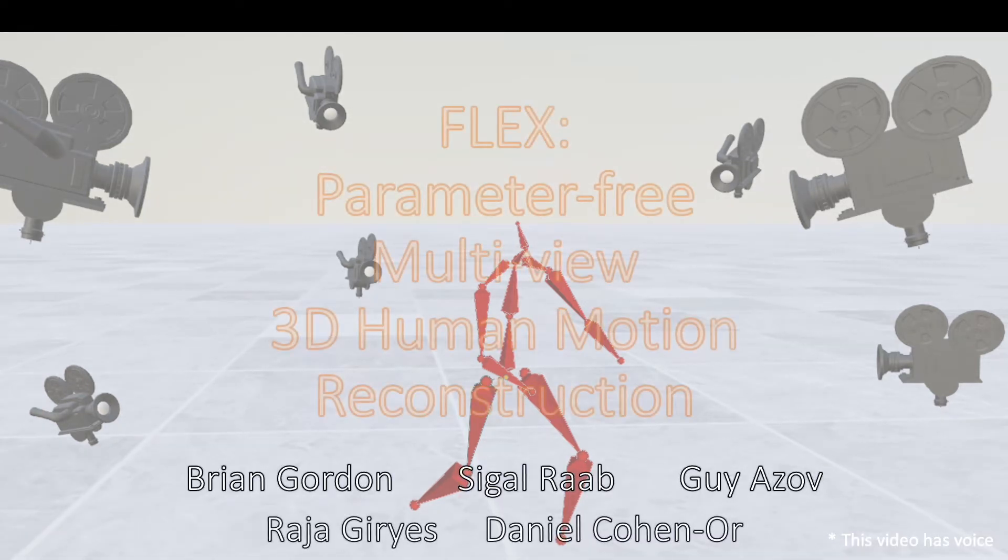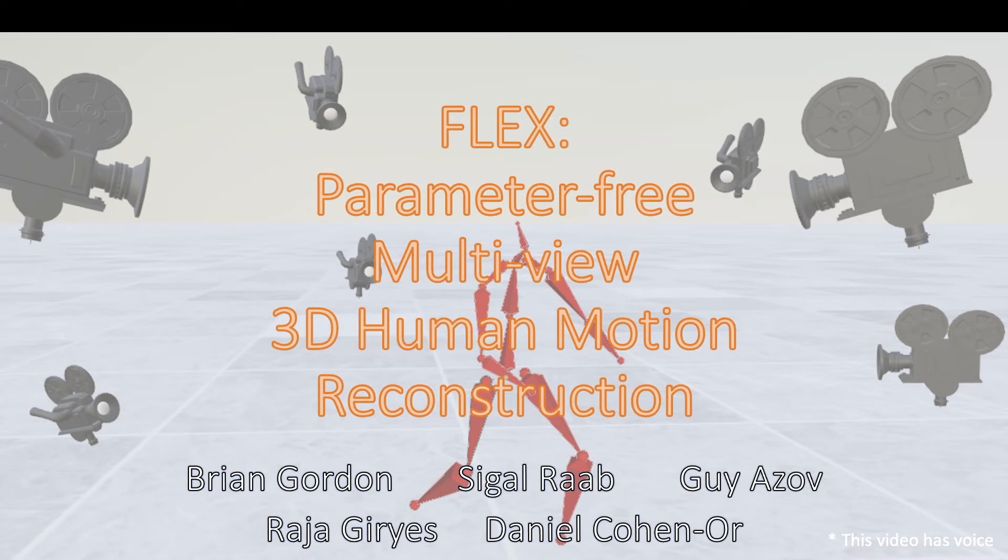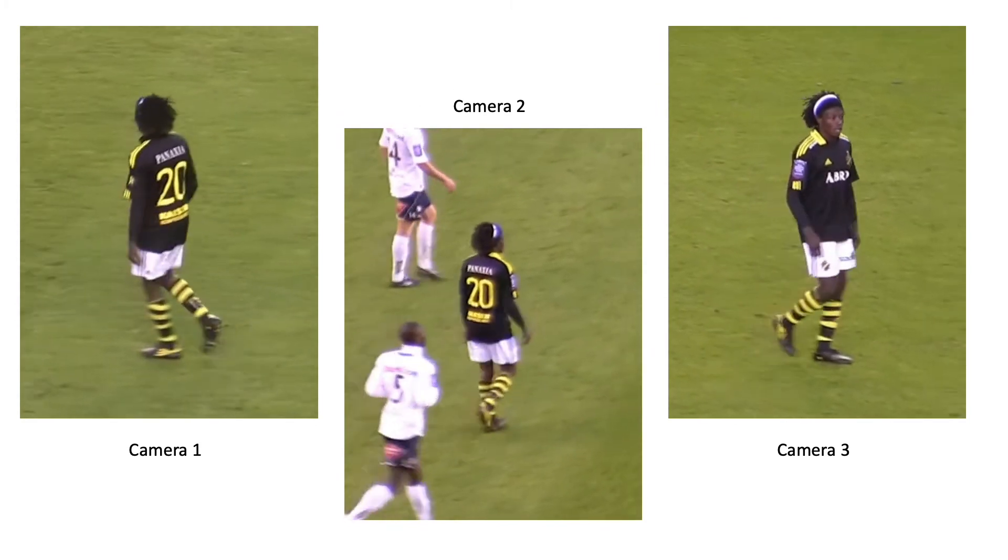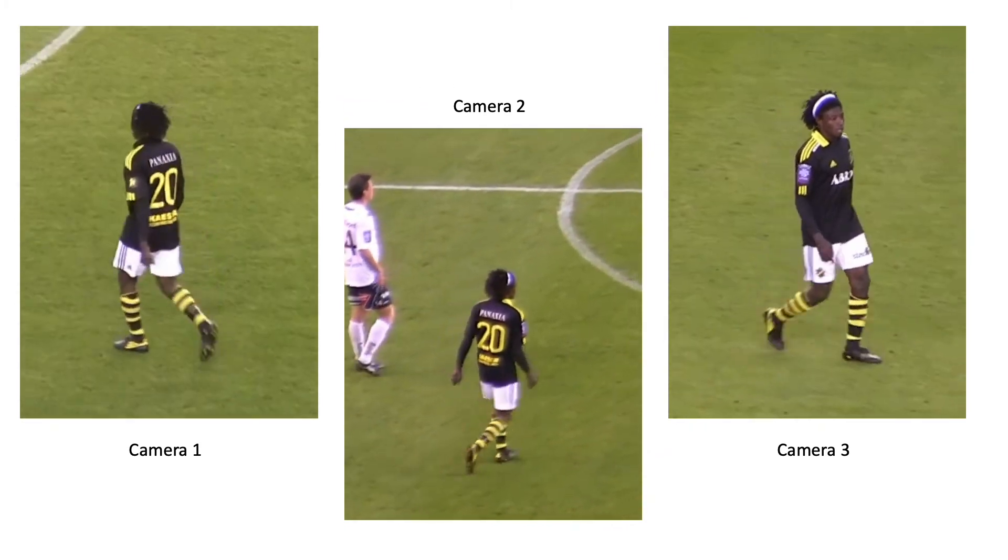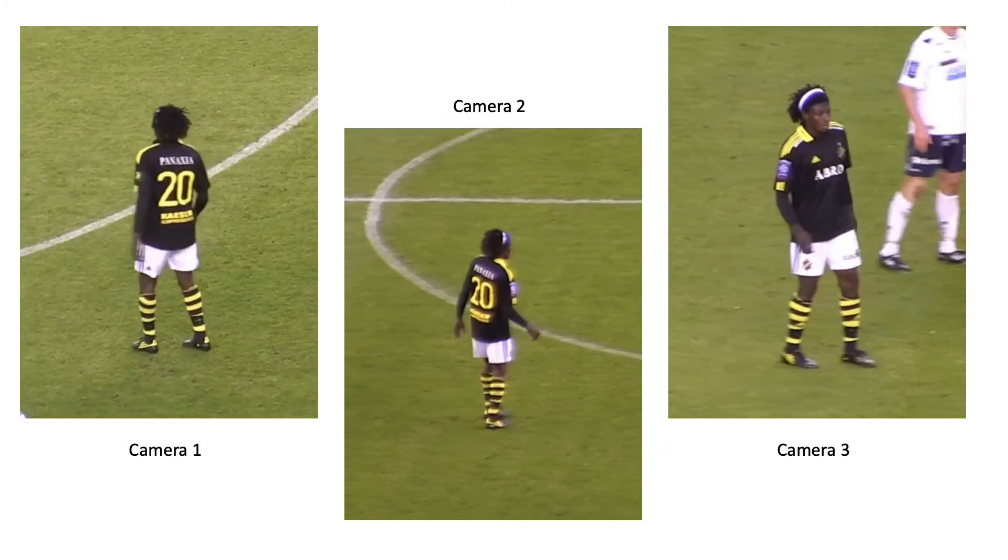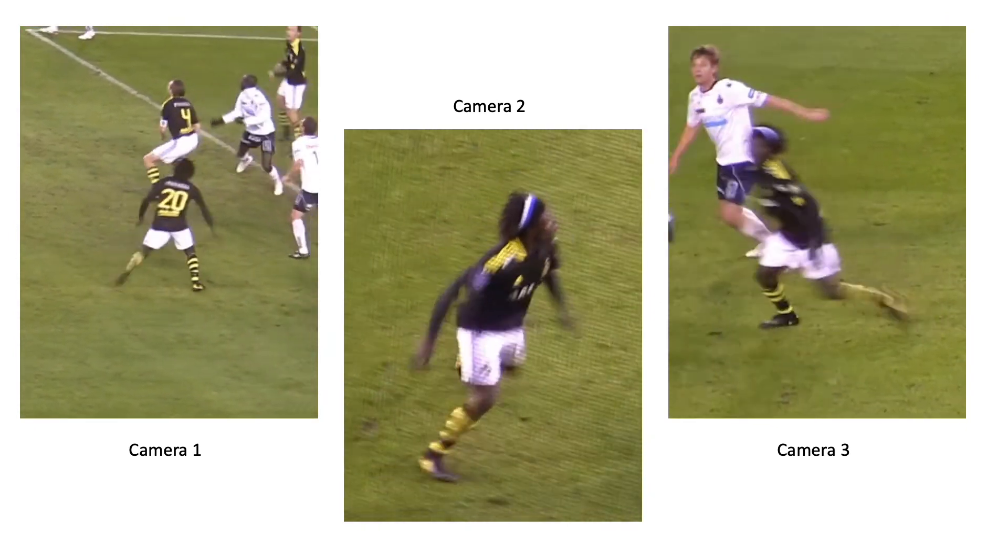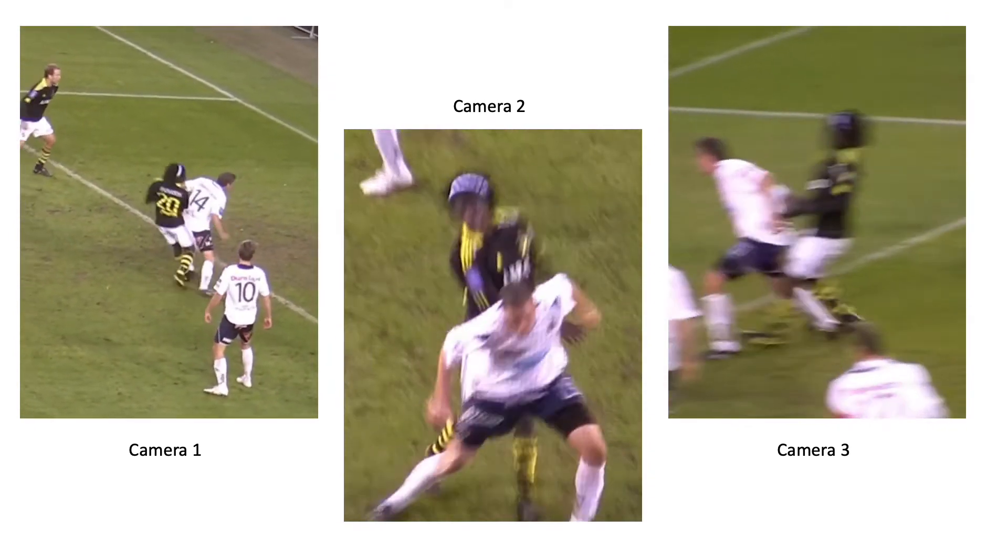We present FLEX, a parameter-free multi-view 3D human motion reconstruction method. The increasing availability of video recordings made by multiple cameras has offered new means for mitigating occlusion and depth ambiguities in pose and motion reconstruction methods.